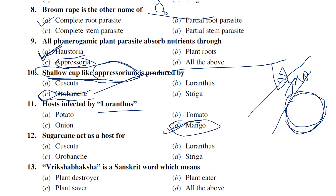Sugarcane acts as a host for Striga. Among Cuscuta, Loranthus, Orobanche, and Striga, Striga is the best one to infect sugarcane — sugarcane acts as a host for Striga.